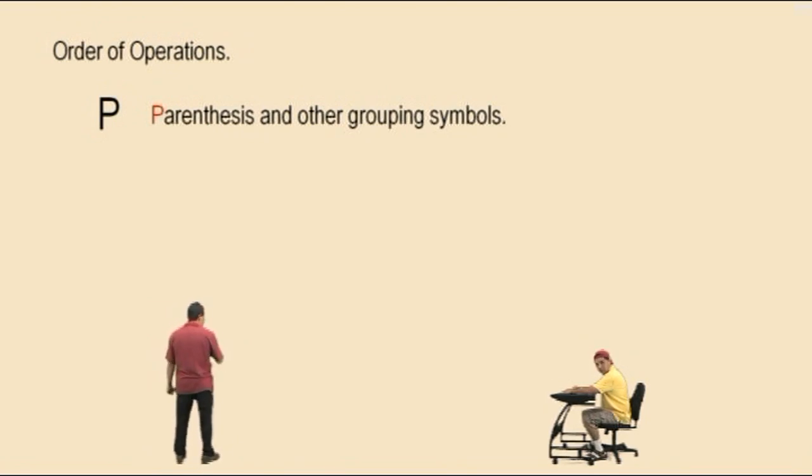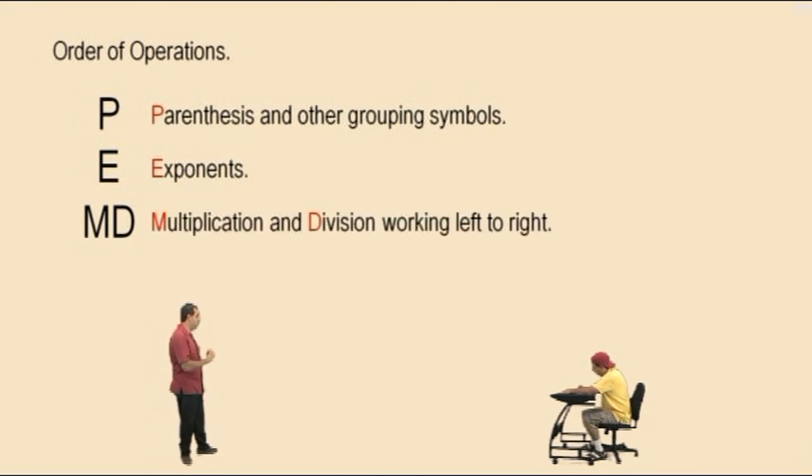Okay, and then our next thing is E for exponents. Okay, we just reviewed that. Now, the next part is MD. Now a lot of people get this wrong in that they think that this says do multiplication before division. That's not what it says. There's only four parts here. Parentheses, exponents, and then multiplication and divisions. But you've got to do these operations working left to right, whichever comes first working left to right.